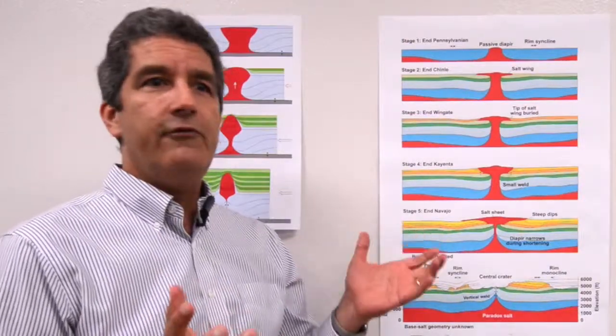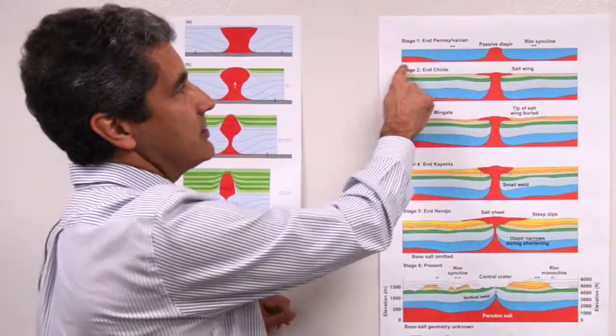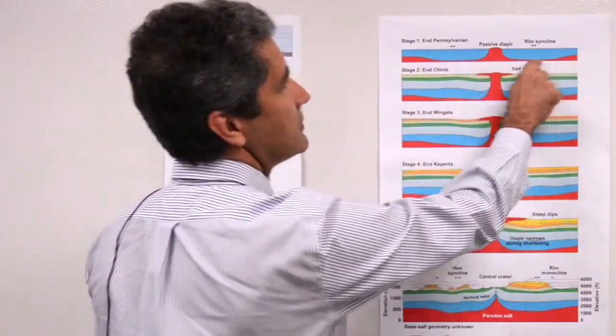And these layers can be two, three, four, five thousand feet thick in some cases. And on this section I've colored a salt layer in red, so this would be the salt.